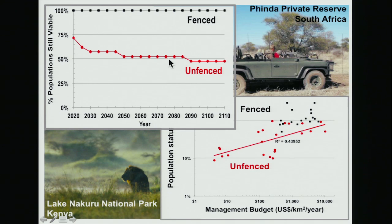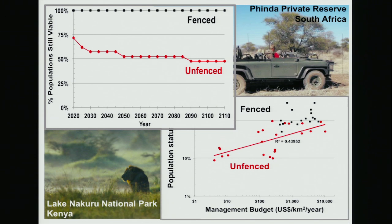If we extrapolate into the future, fenced populations are likely to thrive well into the future. But in unfenced parks — the most common configuration in Africa, where the boundary is just drawn on a map and has no real meaning — lions easily walk across the border and get in trouble outside the park. These lion populations are already low and declining. We're predicting that about half of these unfenced lion populations in Africa will be on the verge of extinction within the next 30 to 40 years.